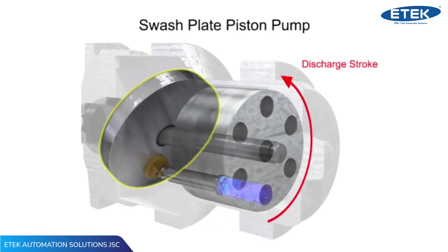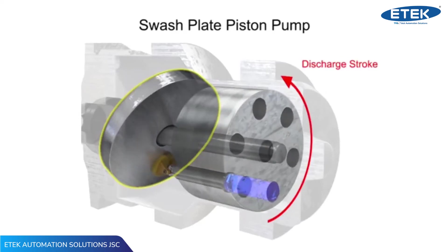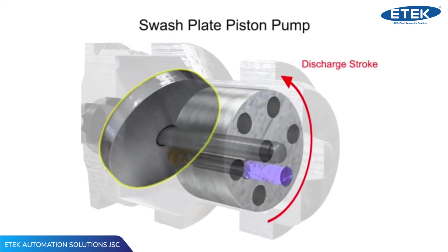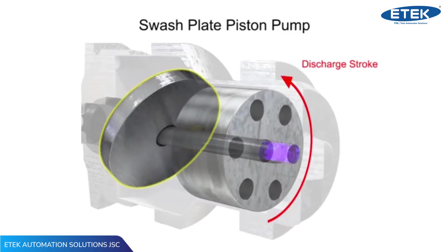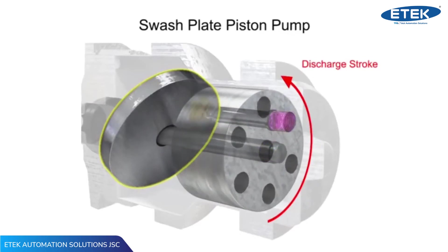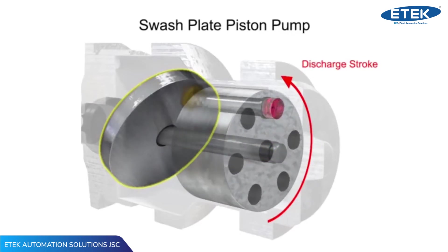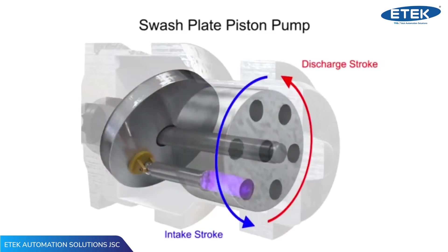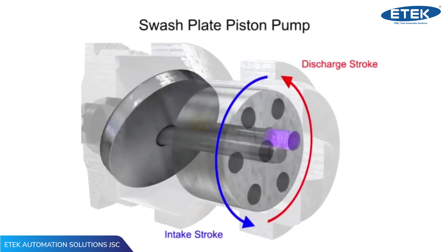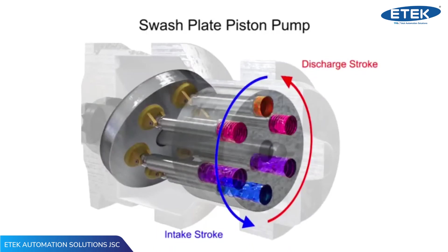On the discharge stroke, the angle of the swash plate forces the pistons back inside the piston block and discharges the fluid. The greater the slant on the swash plate, the further the pump pistons move and the more fluid they transfer. Piston pumps, in general, are manufactured with closer internal fits than other pumps. This means that internal slippage can be less, so that they operate with reasonable efficiency at pressures both too high or too low for the operation of other pumps.